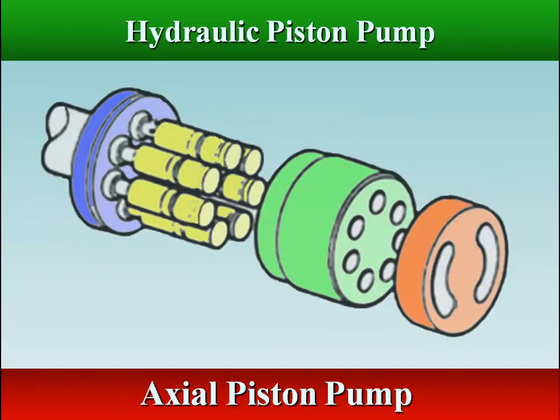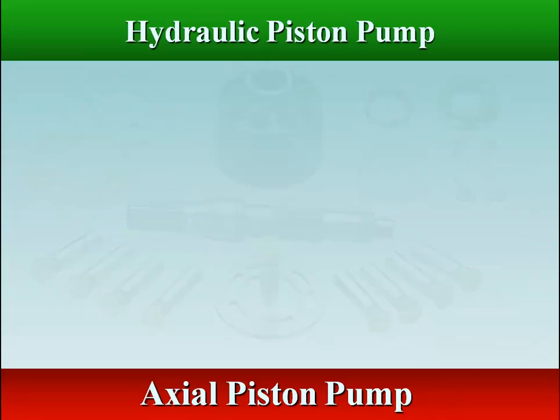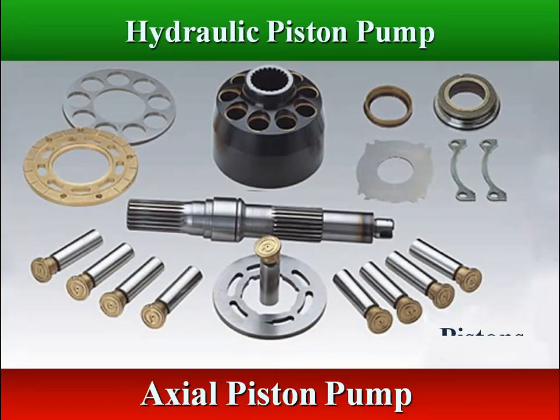Axial piston pumps consist of a cylindrical block with axial bores. Pistons are inserted in the bores, and one end of each piston is connected to a rotating component.